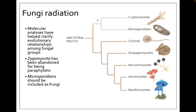On the basal end of this tree, you can see that there are dotted lines indicating cryptomycetes and the microsporidians. These two groups were not originally considered fungus, and have only been added to the fungal kingdom in the last decade. The reason the tree is drawn with a dotted line is because these evolutionary relationships are fairly uncertain, and we're going to need a lot more DNA evidence to figure them out.